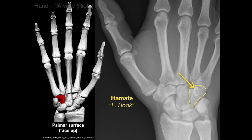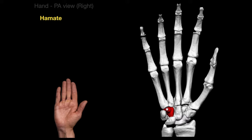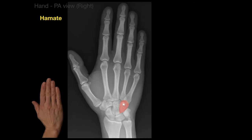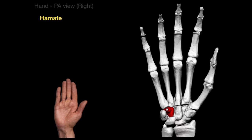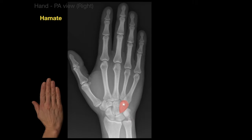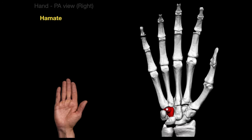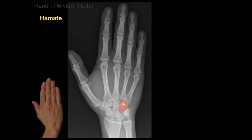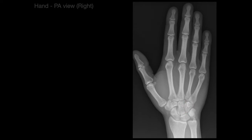Looking at the palmar surface — hand face up — you can see that hook. On the x-ray, which shows the back surface of the hand face down, the hamulus of the hamate appears as marked by an asterisk. Toggling between the palm surface and the back surface gives you a clear idea of where the hamulus of the hamate appears on x-ray.